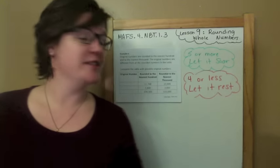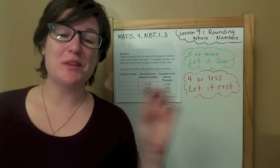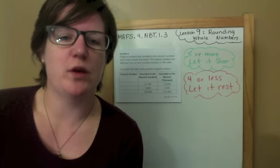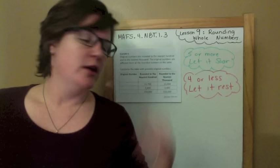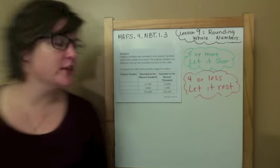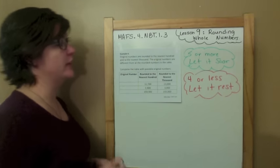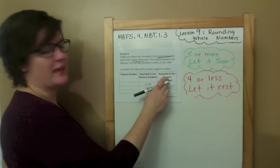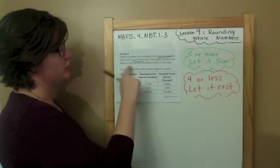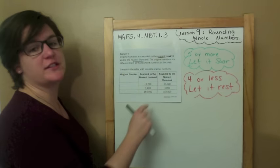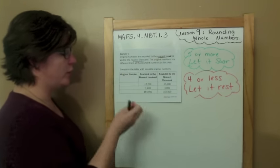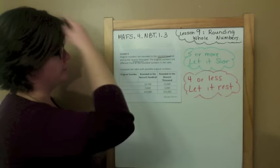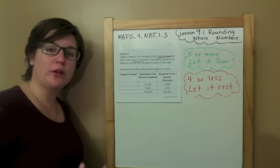Alright, we're on example four — that's our last problem today. This one's a little bit tricky and takes a little bit of testing it out — trial and error — trying to figure out what works and what doesn't. So the original numbers are rounded to the nearest hundred and to the nearest thousand. The original numbers are different from all the rounded numbers in the table, meaning our input cannot be what we currently have. We need to complete the table with possible original numbers.